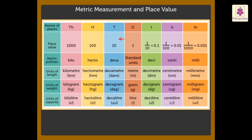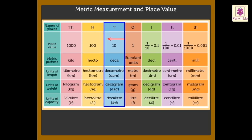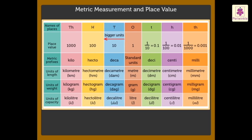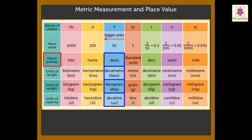As we move to the left, the units in the tens column are ten times bigger than the standard units. We name these as decameter, decagram, and decaliter, as the prefix deca means ten times.